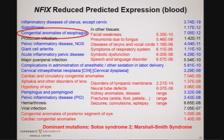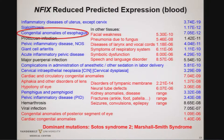Disorders of the tympanic membrane, neural tube defects, kidney anomalies, and kidney disease — with significance ranging from 10⁻⁵ to 10⁻⁷ depending on tissue. Fractures also in the 10⁻⁵ to 10⁻⁷ range. Seizures, convulsions, epilepsy — again 10⁻⁵ to 10⁻⁷. So essentially all of the key features of the Mendelian disease are seen in people with just genetically predicted reduced expression.